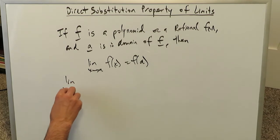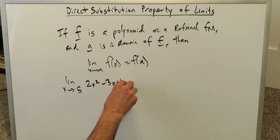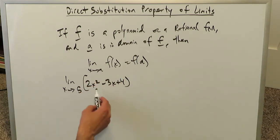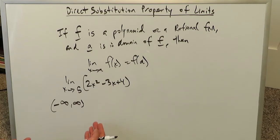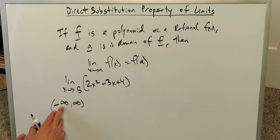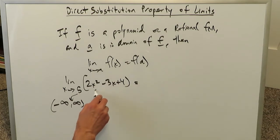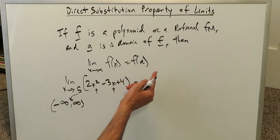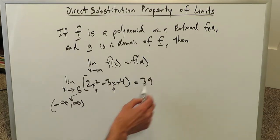Example: limit as x approaches 5, we have the function 2x squared minus 3x plus 4. This is clearly a polynomial with domain negative infinity to infinity — there's no way to zero out the denominator, and there's no negative that you can bring into a radical. Everything fits in a domain of negative infinity to positive infinity, and 5 very well falls right in here. You can literally plug 5 into the x values and determine the value. In this case that value would be 39.